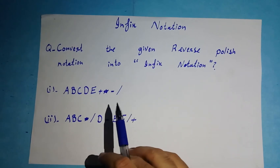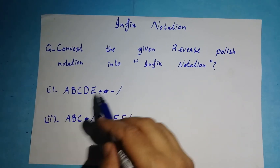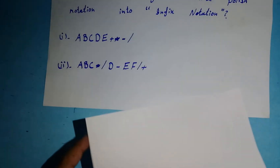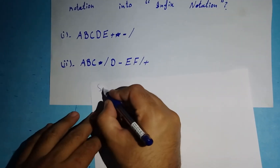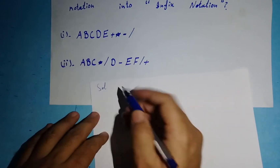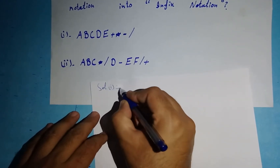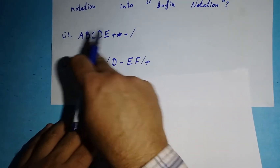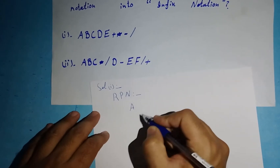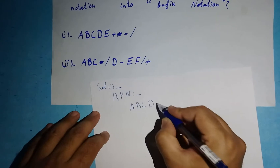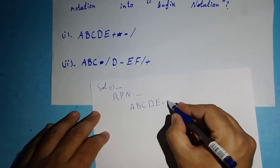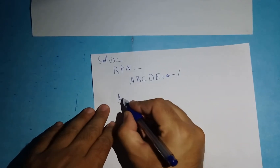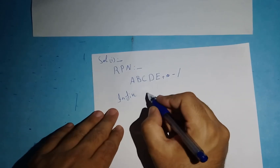I'm going to convert two notations into infix notation. I'll write the heading 'Solution' and under it the heading 'RPN'. The first Reverse Polish Notation I've taken is: a b c d e, then the signs plus, multiply, minus, and divide. Now I'm going to convert this RPN into infix notation.